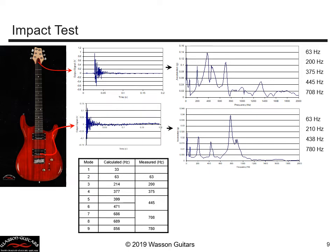But the 63 Hz shows up, and so does the 200 Hz and the 375 Hz — they agree with our finite element analysis. So I'm happy that there is at least some agreement between the real-world guitar and the analysis shown on the previous slides.